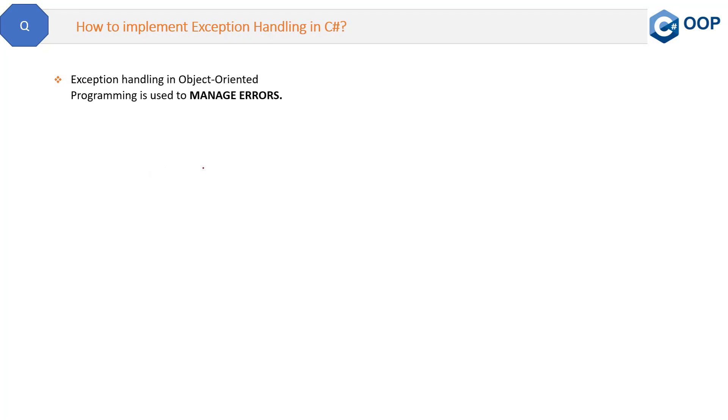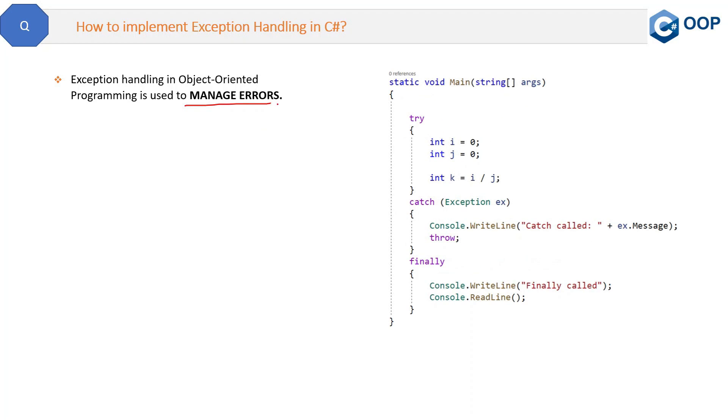Exception handling in object-oriented programming is used to manage errors. Let me show you the code also. Here you can see we have these four main keywords: try, catch, throw, and finally. So these are the keywords through which we do exception handling in C#.